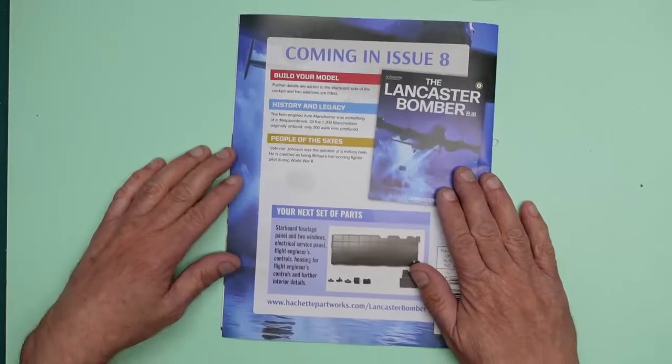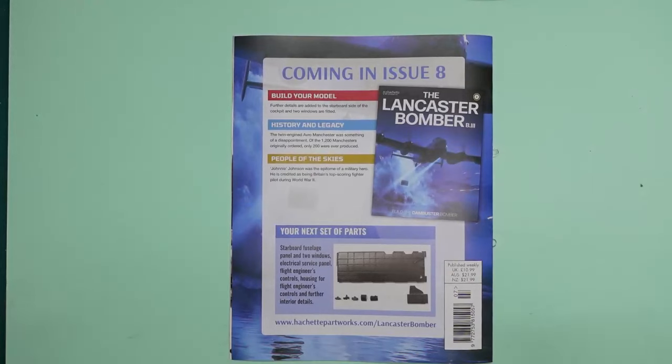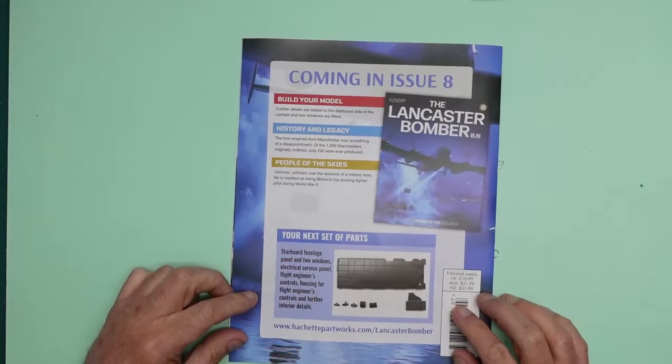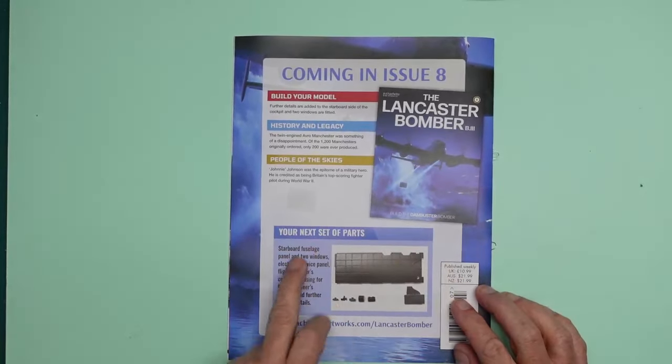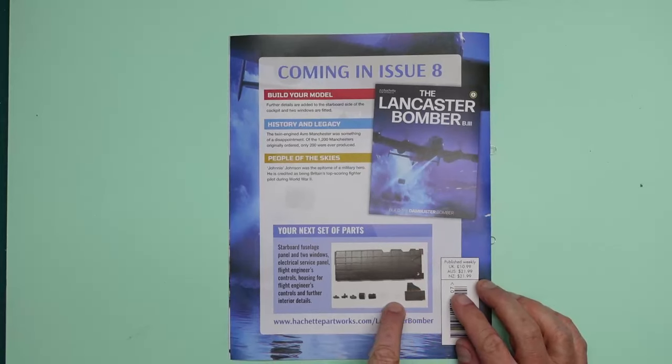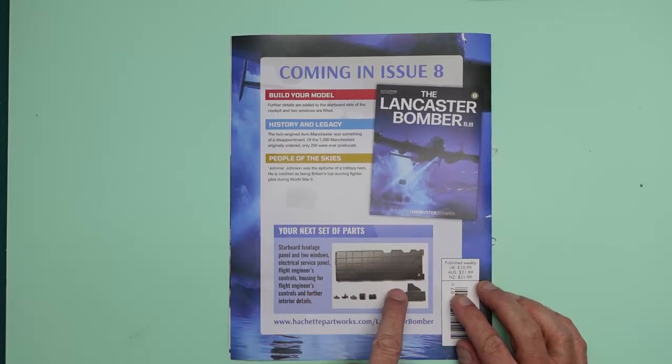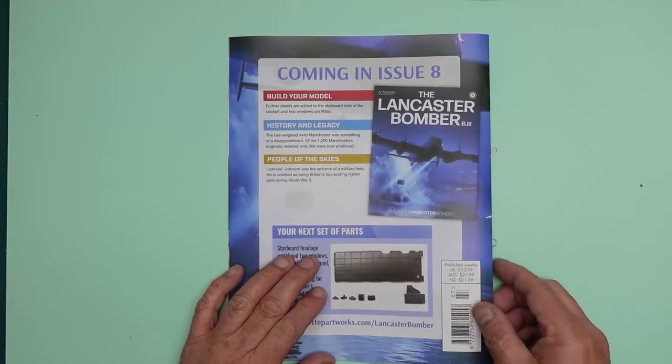There's a Junkers 87 Stuka in a dive. Then finally on here, we've got What's Coming in Issue 8, which I actually have here. They've sent me my third box, which is parts 7, 8, 9 and 10. You're going to get all those very shortly. Coming in part 8, we've got the starboard fuselage panel, two windows and some electrical service panels. That picture is actually wrong. That is actually the port side fuselage. So I'm hoping they don't send us another port because they've already got that one.